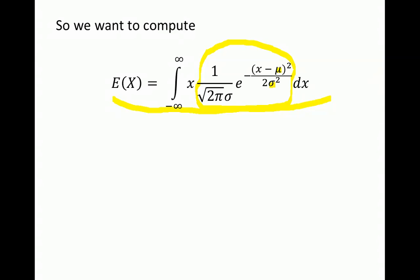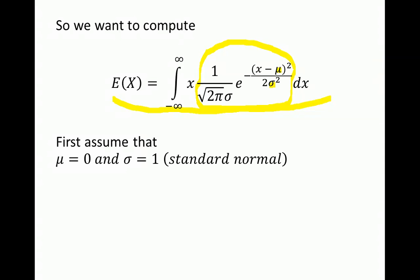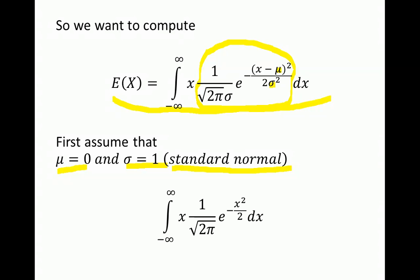To simplify this complicated integral, let's first assume the mean is zero and sigma is one. When μ=0 and σ=1, X is a standard normal random variable. The expectation of a standard normal random variable has a cleaner expression, so we compute that integral first.